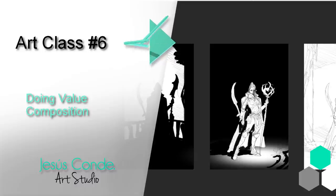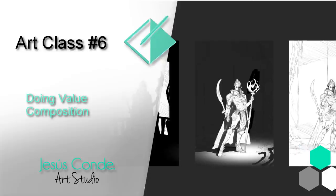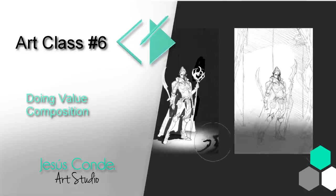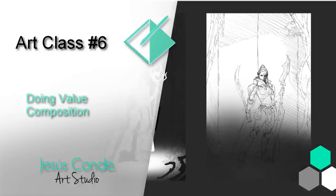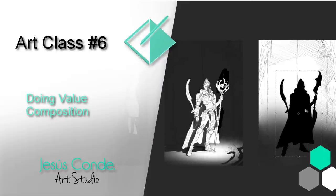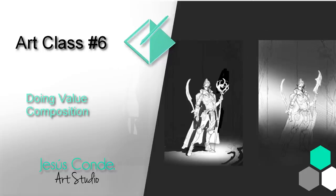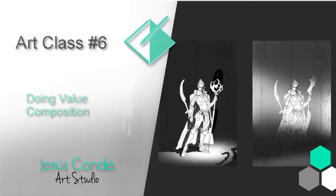Hey guys, what's up? Welcome back to another episode of Digital Painting Art Show. My name is Jesus Conde and this is art class number six. What we're going to do in this class is talk about creating value concepts — making compositions using lighting and then applying colors to those compositions, so it's really easy to know what we're going to do later when we start the final painting. Let's get started.